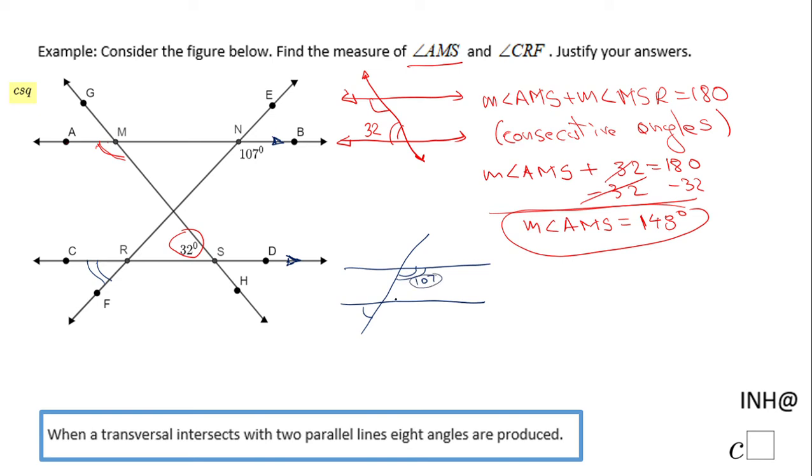We're going to look at this angle which is 107 and this angle here, they are what we call consecutive angles. So the measure of angle BNR, which is 107, plus the measure of angle NRS equals 180. They are again consecutive angles or same side interior angles, that is the justification we are asked to bring.